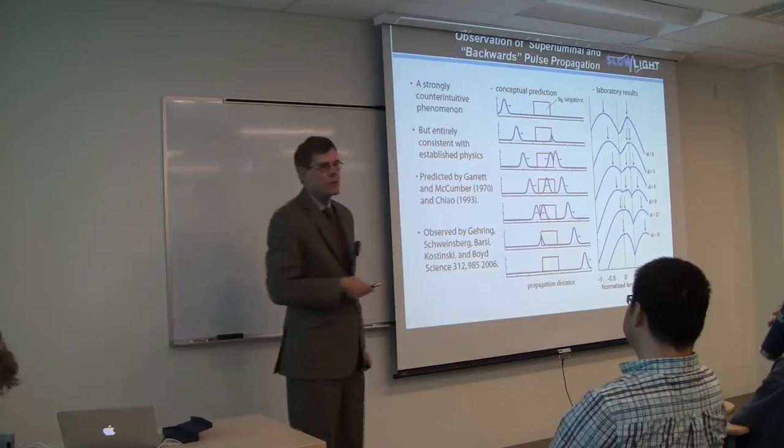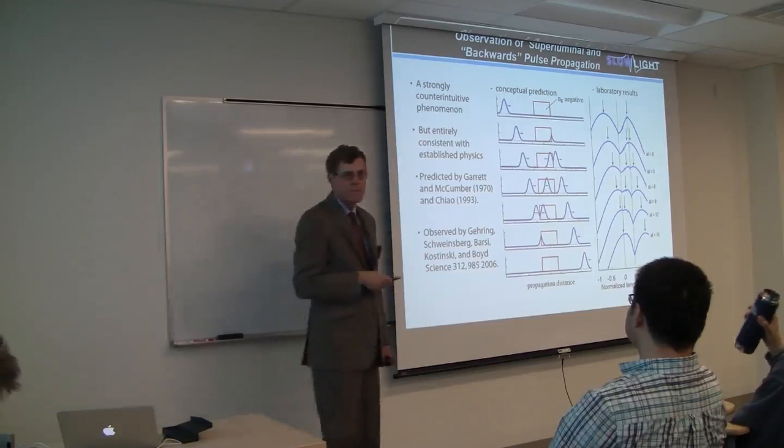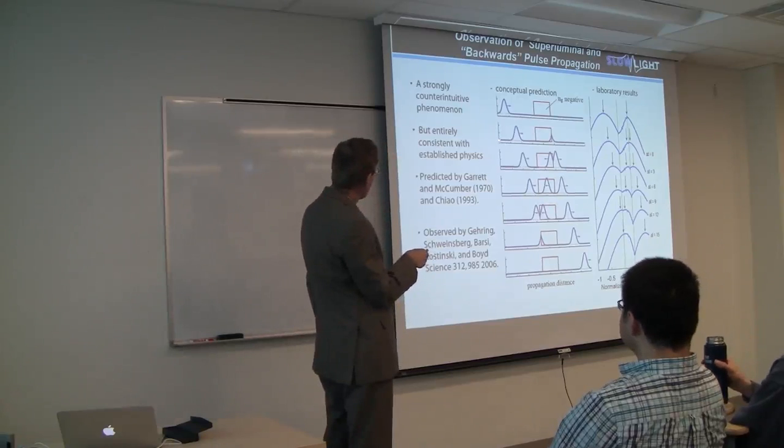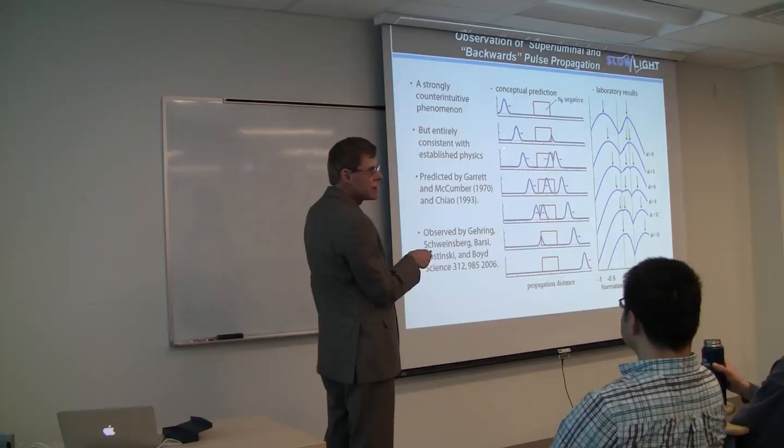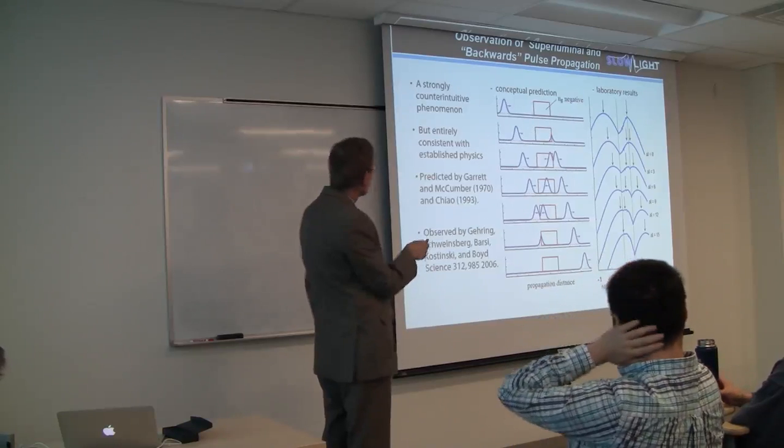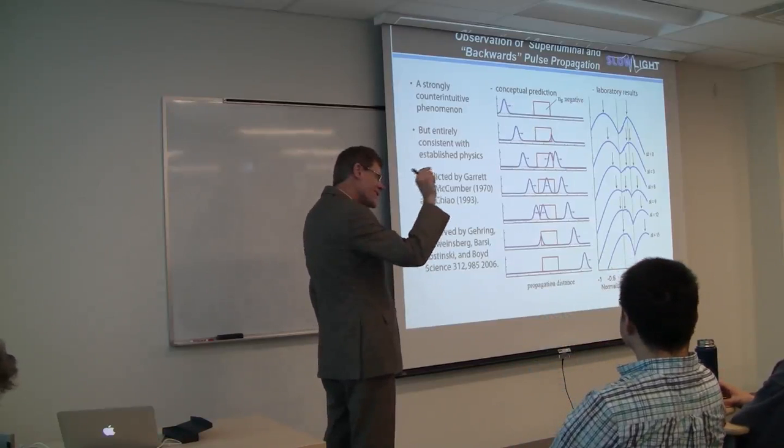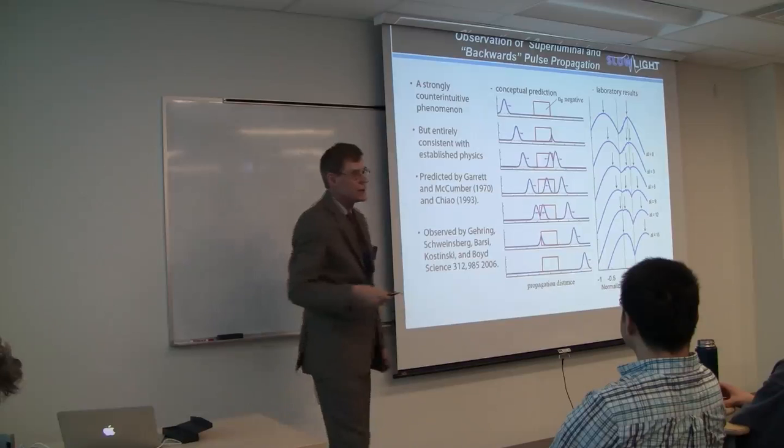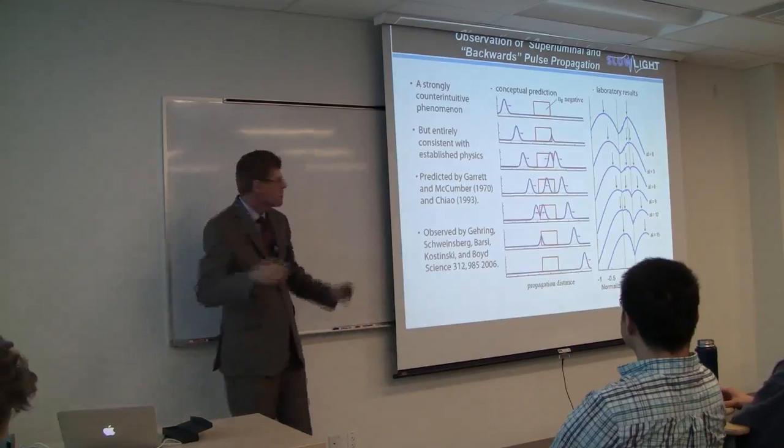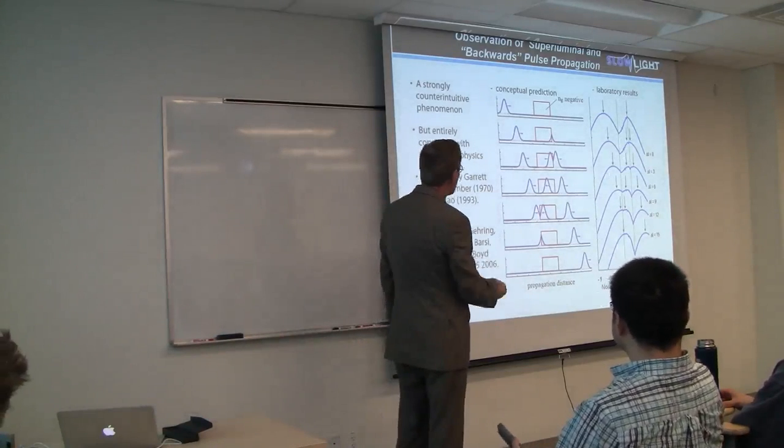How do you explain this? Your first thought is this must violate causality. But actually, it doesn't because I did this calculation for a Gaussian pulse. A Gaussian pulse has wings that go from minus infinity to plus infinity. This pulse is already here, a tiny bit of it. There's no danger of violating causality.